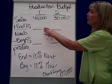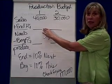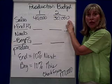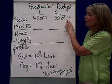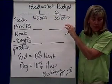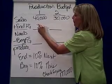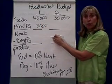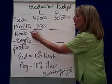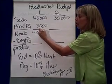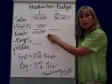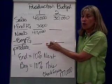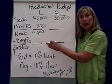So if I'm in the first quarter, I want to end the first quarter with 10% of the second quarter's sales. 10% of 30,000 is 3,000 units. So as far as what my needs are for the first quarter, I need 43,000 bottles of water. Some of those bottles of water are already on the shelf — in other words, they're part of beginning finished goods.